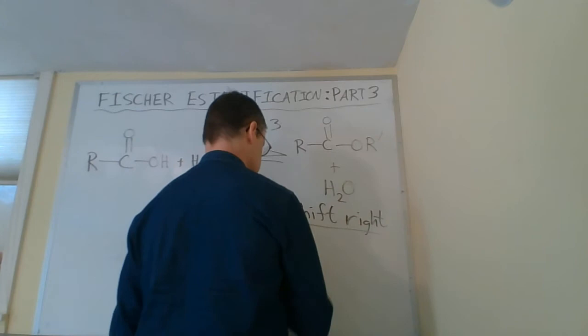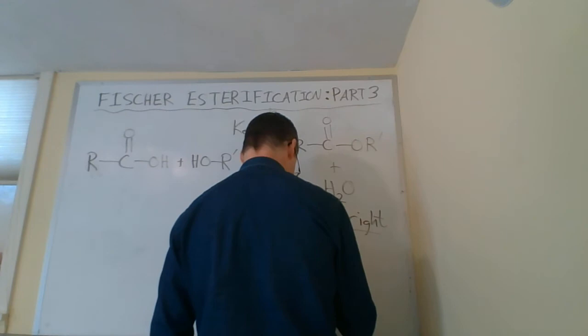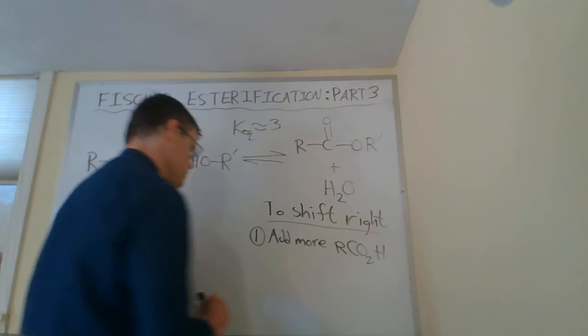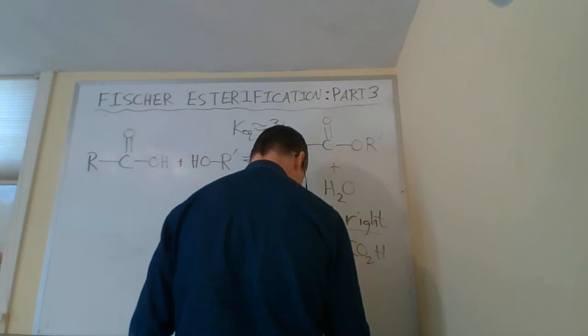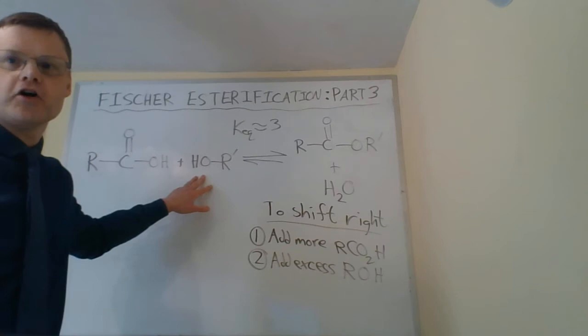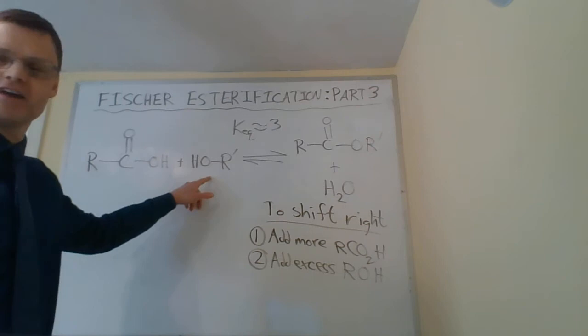Some precise things we could do to shift the equilibrium to the right: We could add more of the carboxylic acid, RCO2H. We could have an excess of that relative to the alcohol. We could add excess or more of the alcohol. And this is probably one of the more common things that's done for a Fischer esterification. People will actually use the alcohol as a solvent. When something's a solvent, and it's a reactant, then it's really an excess.